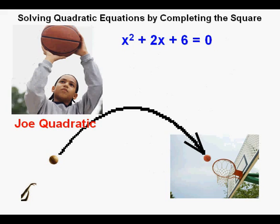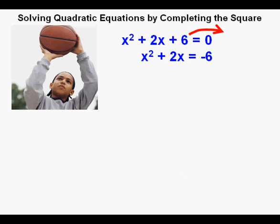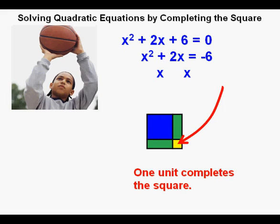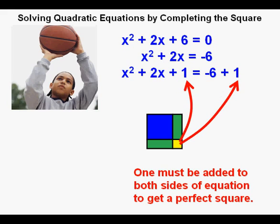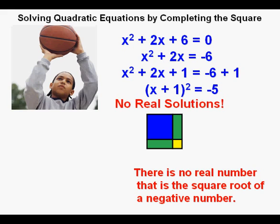Now we'll complete the square to solve x squared plus 2x plus 6 equals 0. The first thing we do is move the 6 over to the right side of the equation, where it becomes negative 6, so we have x squared plus 2x equals negative 6. Since we have two x's, we have just one for either side of the x squared algebra tile. Next, we complete the square by filling it in with just one little yellow square, so we add 1 to both sides. This simplifies to quantity x plus 1 squared equals negative 5. When we take the square root of both sides, the square root of negative 5 is not a real number, so there are no real solutions to this quadratic equation.